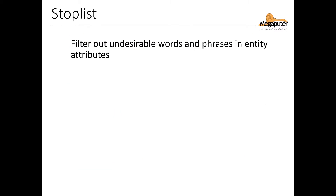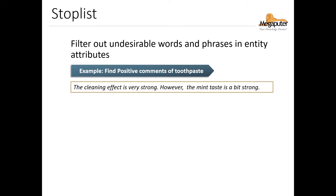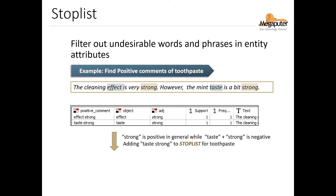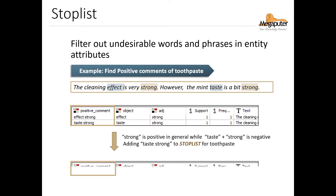Let's now talk about the stop list post processor. This post processor is often used as an efficient way to get rid of false positives in sentiment analysis. In this example, we have text that reads: 'The cleaning effect is very strong. However, the mint taste is a bit strong.' Our goal is to find positive comments about toothpaste. The system would capture 'effect strong' and 'taste strong.' Normally the word 'strong' has a positive connotation, but in this case it's actually negative when describing the taste of a toothpaste. So if we add 'strong' to our stop list when it's describing taste, the system won't consider it a positive sentiment in that situation — it's no longer captured in our positive sentiment evaluations.